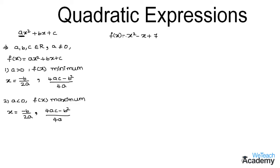First, we consider the given expression as f(x), then we compare it with ax² + bx + c. After comparing, we get a = 1, b = -1, and c = 7.